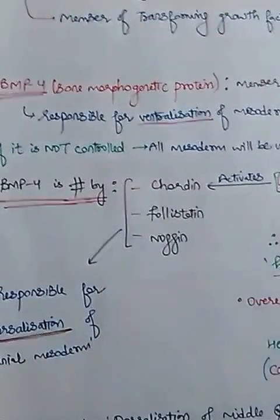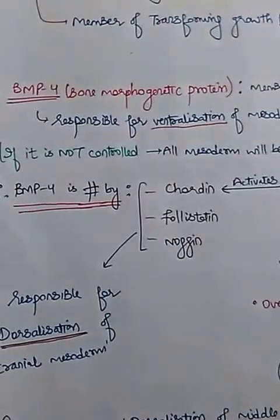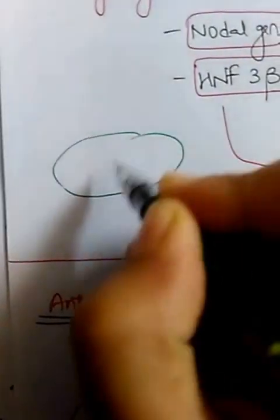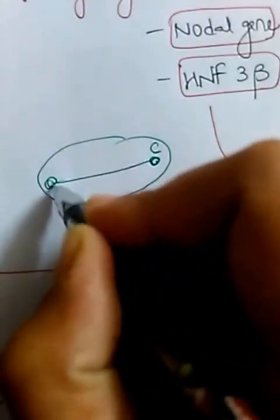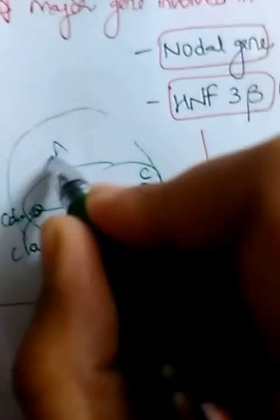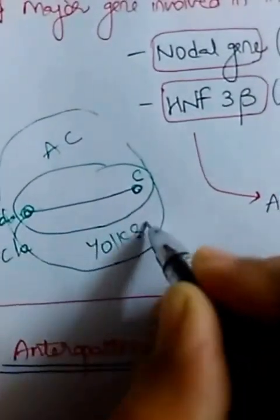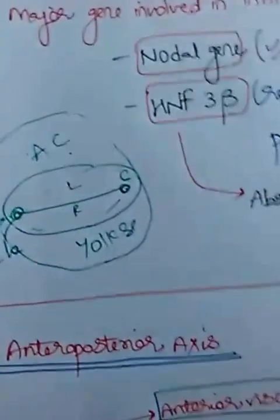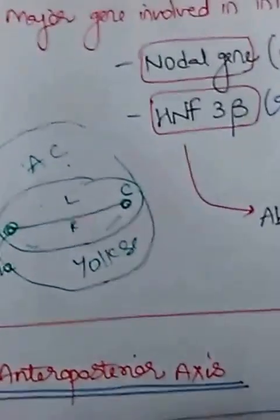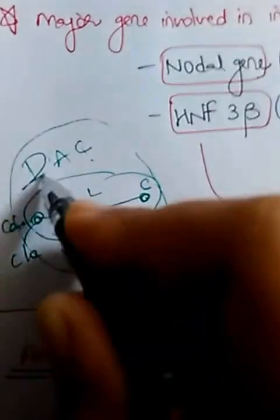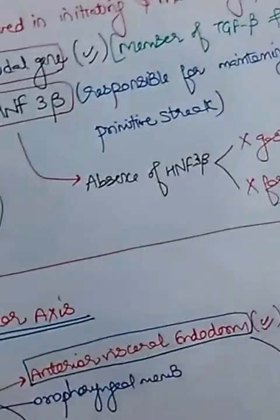As we discussed, there are some axes like dorsal axis and ventral axis. As you can see here, this is the oropharyngeal membrane, therefore the cranial end; this is the cloacal membrane, therefore the caudal end. This is the amniotic cavity and yolk sac. The surface here will be the dorsal surface and the opposite side will be the ventral surface.